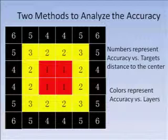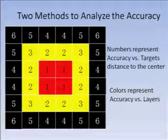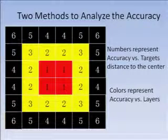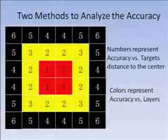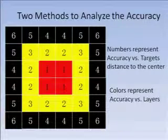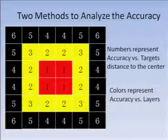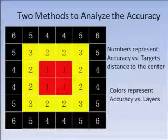The second method, I divide the 36 cells into 3 layers, which were represented by colors here. This method was also used to see if there were relations between accuracy and target locations.